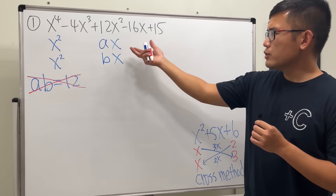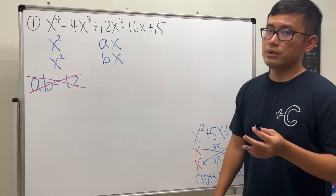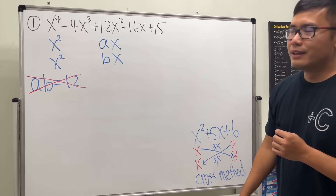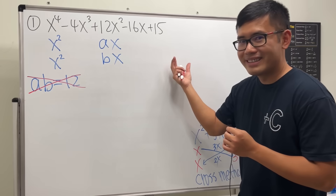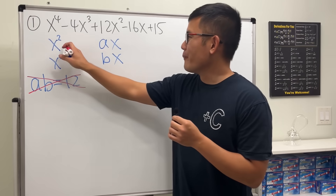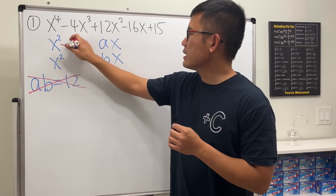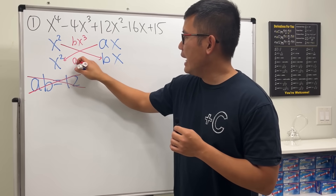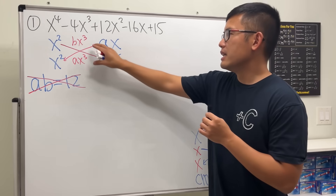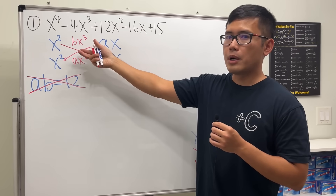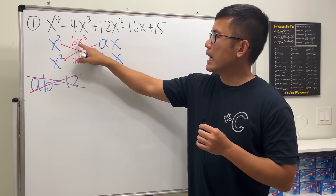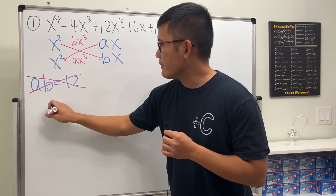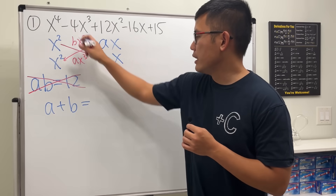We'll label the linear terms ax and bx. This is where we can apply the cross method — in fact, this is the double cross method. Taking this times that gives bx cubed, and this times that gives ax cubed. These are the only two ways to produce the x cubed terms, so we must have a plus b equal to negative 4.